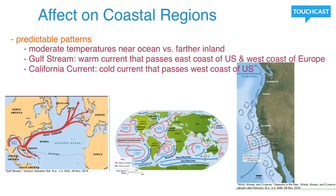Because this video is focusing more on ocean currents and weather as opposed to storms, let's talk about that effect on coastal regions. Ocean currents have a major impact on weather especially around coastal regions, because they carry that energy to these areas as they pass alongside them. One predictable pattern is moderate temperatures near the ocean compared to places further inland at the same latitude. For example, in the United States, a coastal location will have more moderate temperatures — not as low lows and not as high highs — compared to somewhere further inland where they have extremes.